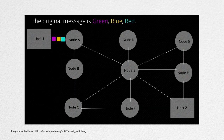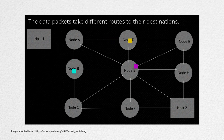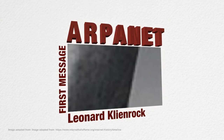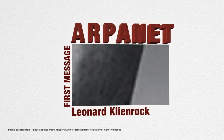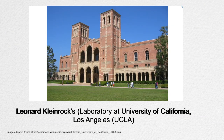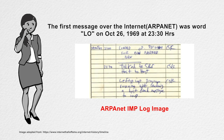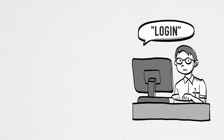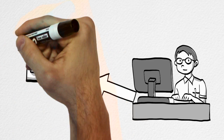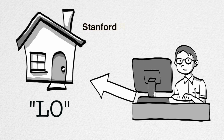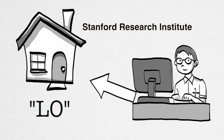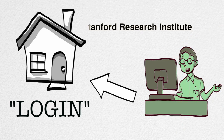ARPANET was an experimental network designed to keep computers connected to this network communicating with each other even if any node, due to a bomb attack, failed to respond. The first message was sent over ARPANET, a packet switching network, by Leonard Kleinrock's Laboratory at University of California, Los Angeles. The first message sent over the internet was the letters 'LO'. They intended to send the word 'login' but only the first two letters reached the destination at the second network node at Stanford Research Institute, and before the last three letters could arrive, the network went down due to a glitch. Soon the error was fixed and the message was resent.